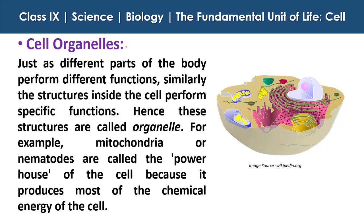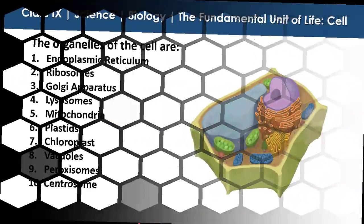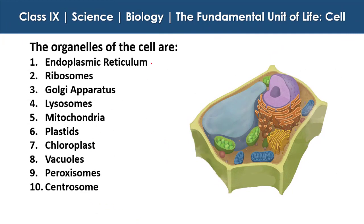Next are cell organelles. Just as different parts of the body perform different functions, similarly the structures inside the cell perform specific functions, hence these structures are called organelles. For example, mitochondria are called the powerhouse of the cell because they produce most of the chemical energy of the cell. The organelles of the cell are: endoplasmic reticulum, ribosomes, Golgi apparatus, lysosomes, mitochondria, plastids, chloroplasts, vacuoles, peroxisomes, and centrosomes.